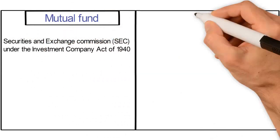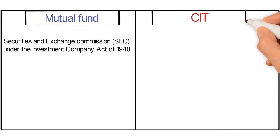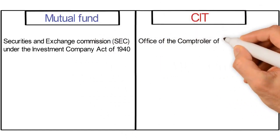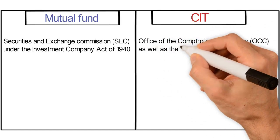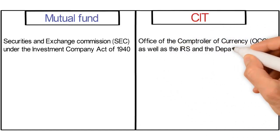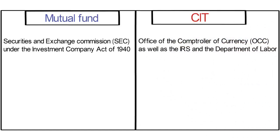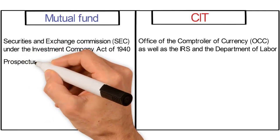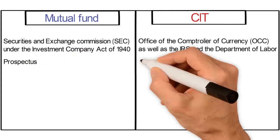A mutual fund is regulated by the Securities and Exchange Commission under the Investment Company Act of 1940. A CIT is regulated by the Office of the Comptroller of Currency, as well as the IRS and the Department of Labor. CITs are generally less expensive than mutual funds because of fewer regulatory requirements under the OCC oversight compared with the SEC mutual fund requirements.